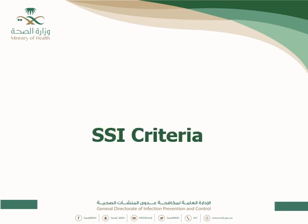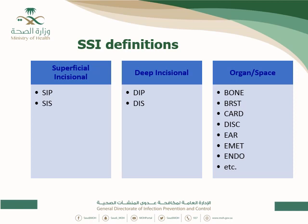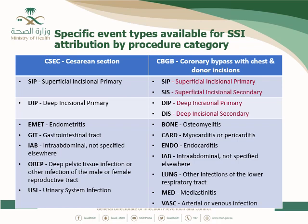Speaking now about the SSI criteria. The skin has a superficial part — skin and subcutaneous tissue — a deep part which includes fascia and muscles, and an organ part which includes the intestine, heart, lung, and many other organs. SSI is divided into superficial, deep, and organ. For superficial and deep, it can be primary incision or secondary, giving us superficial incisional primary, deep incisional primary, superficial incisional secondary, and deep incisional secondary. For organ SSI, it is named by the organ: bone, breast, cardiac, disc, and so on.